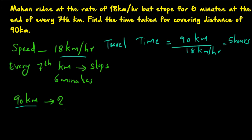In addition to traveling, he is stopping for 6 minutes at the end of every 7 km. So how many times does 7 km fit into 90 km? 90 divided by 7 is 12, since 12 times 7 equals 84. After 84 km, the next full 7 km interval is not completed because he finishes at 90 km. So he stops 12 times, each time for 6 minutes.